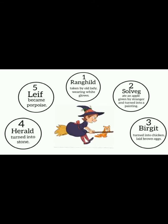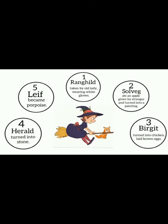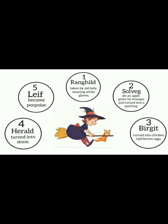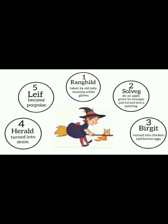She said the first child, named Ranghild, was playing outside with her sister when she went off with a tall lady wearing white gloves and was never seen again. The second child from the Christiansen family, Solveig, ate an apple given to her by a witch who was a stranger, and she was transported into a painting with ducks in her family's living room. The third child was a little girl named Birgit who turned into a chicken with feathers all over her body and even laid brown eggs. The fourth was a little boy named Harold who turned into granite stone. And the fifth boy, named Leif, turned into a porpoise.